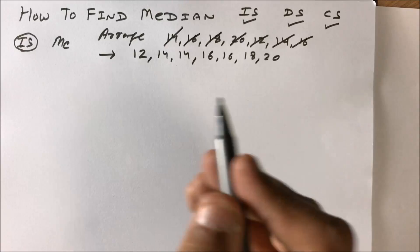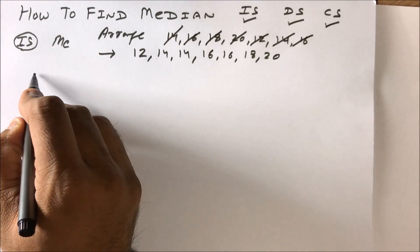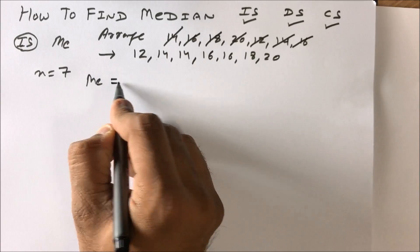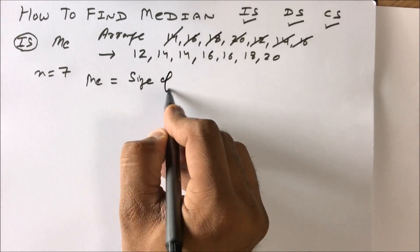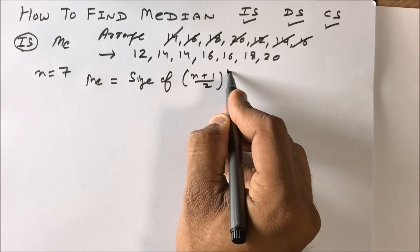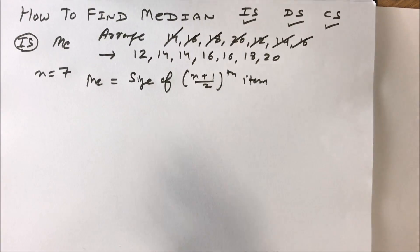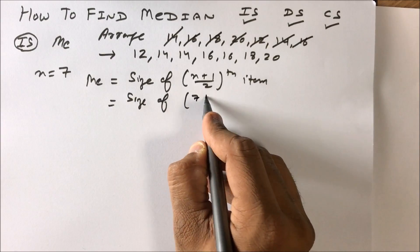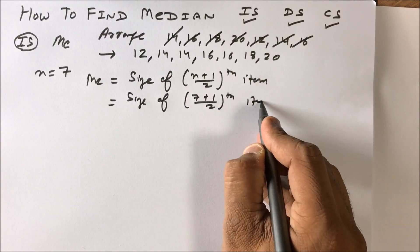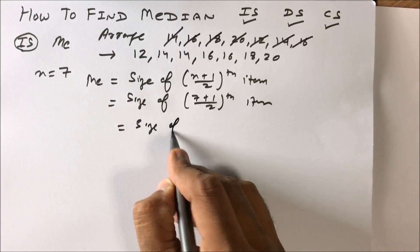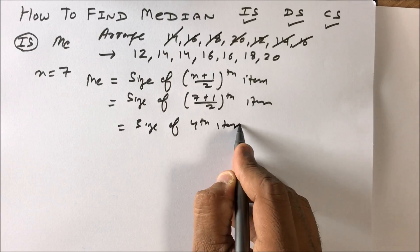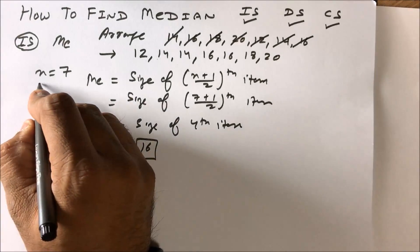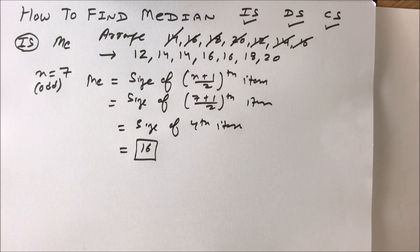We count: 1, 2, 3, 4, 5, 6, 7 — so n is 7. To find the median, the formula is the size of the (n+1)/2 th item. So we have the size of (7+1)/2 = 4th observation. Counting 1, 2, 3, 4 — the answer is 16.